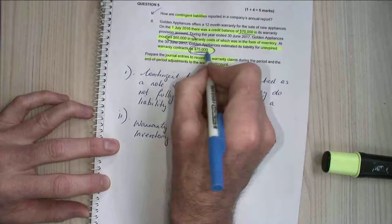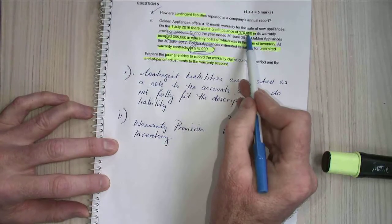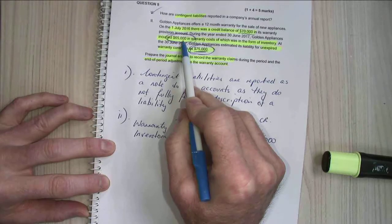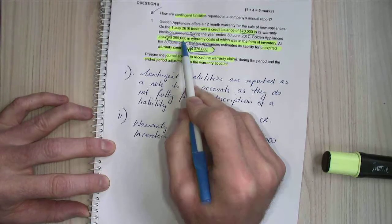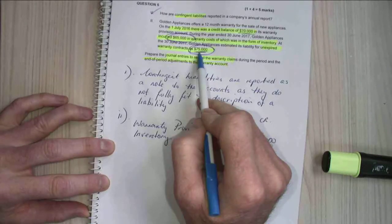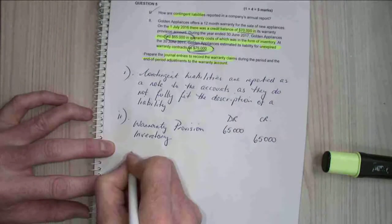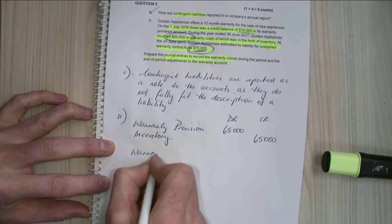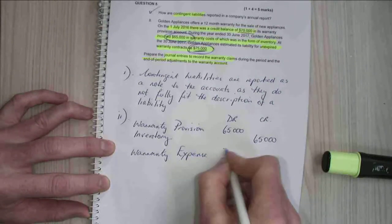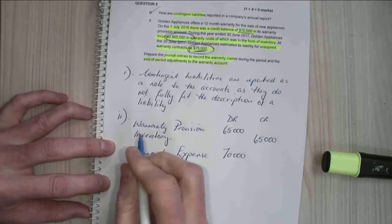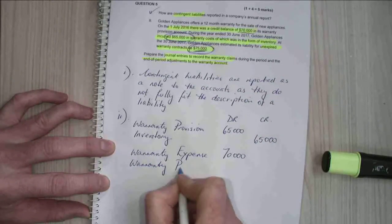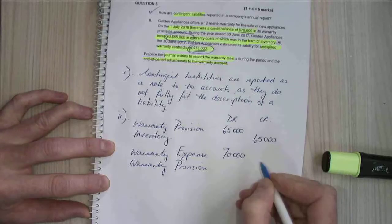The next part is this $75,000. Now, I had $70,000 in the account. I've used up or utilized $65,000 of it, so left with a $5,000 balance. Now I want to make the balance $75,000, so I'm going to have to add in another $70,000. So I'm going to have a warranty expense of $70,000 and a warranty provision of $70,000.